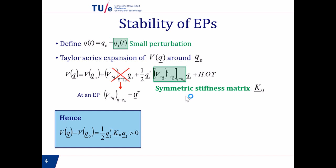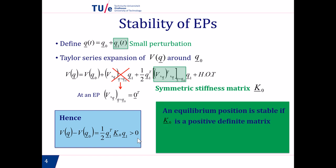The quadratic term contains the matrix of second derivatives of V evaluated at q-zero, and this matrix is the stiffness matrix of the system — a symmetric matrix K-zero. With our stability condition, we require that one-half of q-one-transpose times K-zero times q-one is greater than zero. For this to hold, the stiffness matrix K-zero must be positive definite. For a two-by-two matrix, this requires that the determinant is greater than zero and that all diagonal entries are greater than zero.